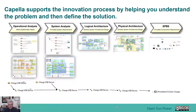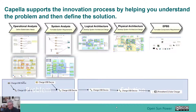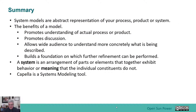We're going to take you all the way from operational analysis and system analysis, through logical, physical, and what they call the end product breakdown structure — defining the components of the system. We'll walk through defining the problem and understanding how the problem leads to delivering the solution. In summary: system models are abstract representations of your process, product, or system. The benefits include promoting understanding, promoting discussion, allowing a wide audience to understand concretely what is being described, and building a foundation for further refinement. A system is an arrangement of parts that together exhibit behavior the individual constituents do not, and Capella is the system modeling tool we'll use.